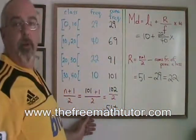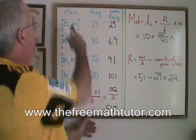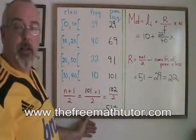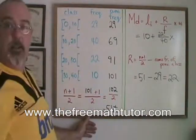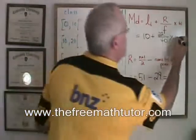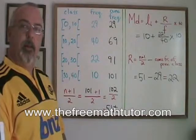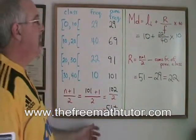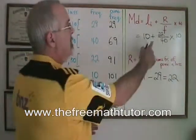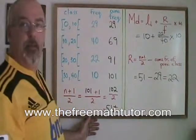And we're going times W. W is the width of the median class, but that's the same as the width of all of the classes. The width of the classes in this table is 10. So we put a 10 here. Now all that is left for us to do is to follow the rules of BEDMAS to simplify this expression and we will have our median.